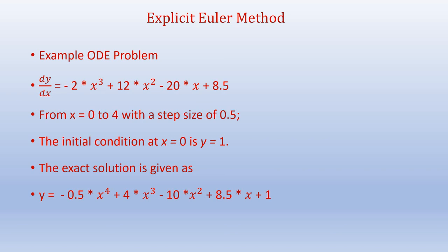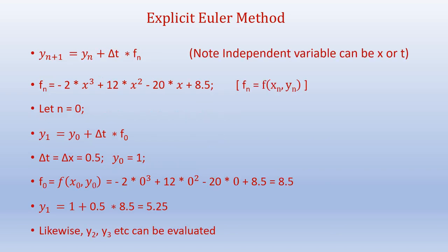Now we can do an example ODE problem. dy/dx is given, and we need to solve from x = 0 to x = 4 with a step size of 0.5. The initial condition is y(0) = 1, i.e., y₀ = 1. The exact solution is available. We use the explicit Euler equation y_{n+1} = y_n + Δx·f_n, where the independent variable is x and the function f_n is expressed as a function of x and y.